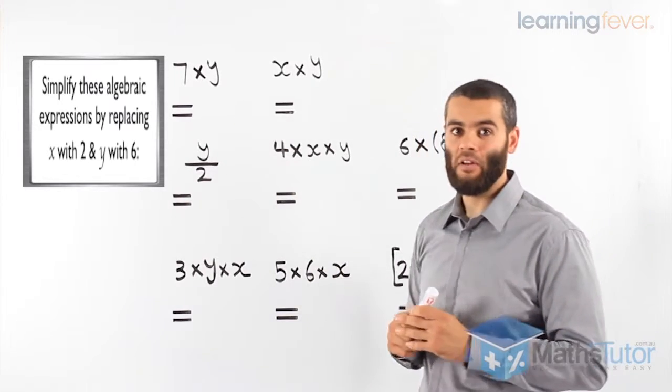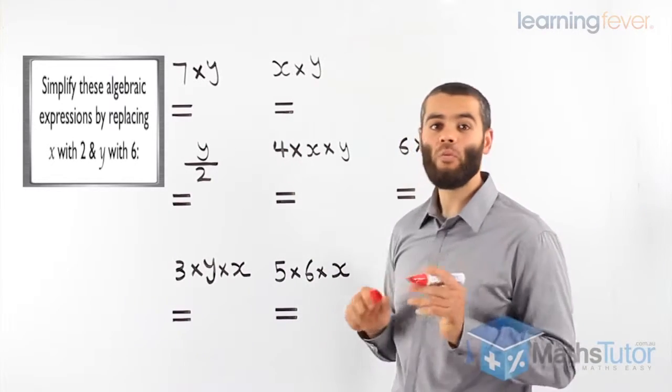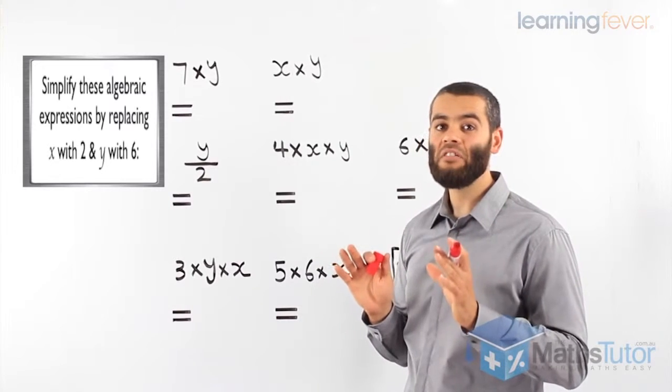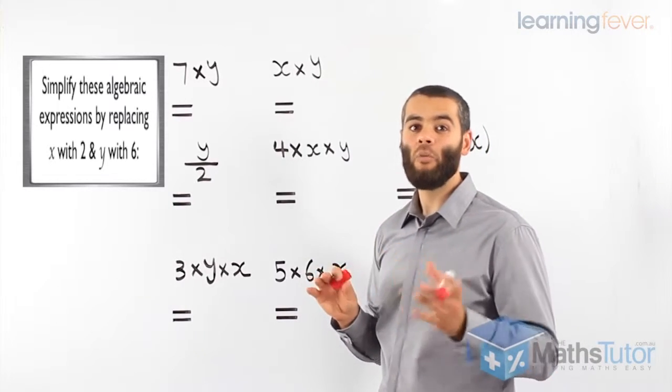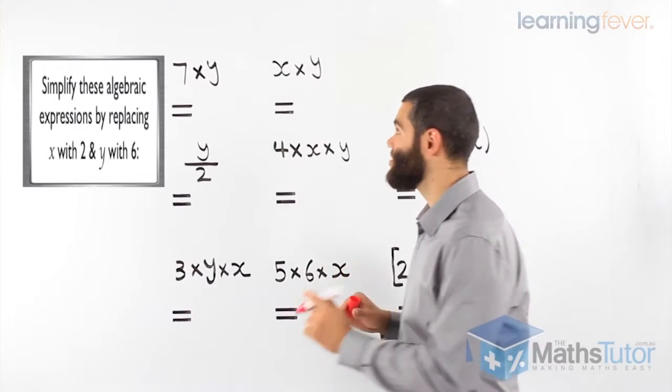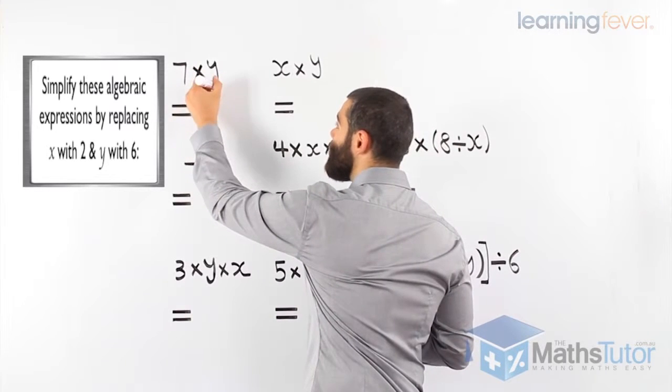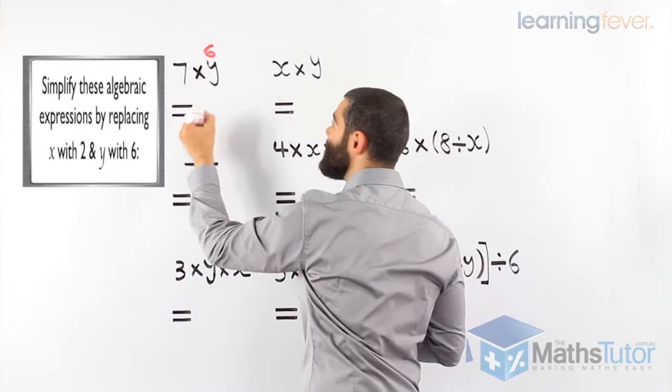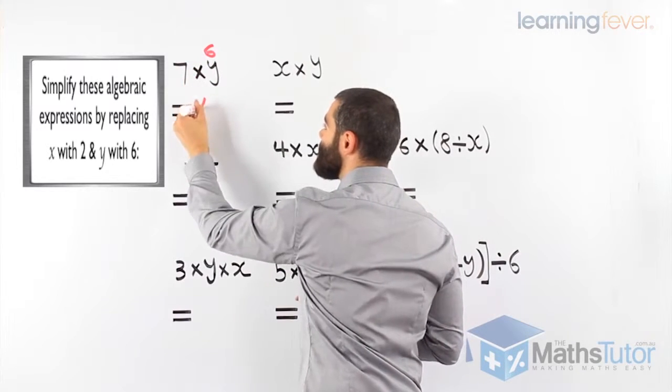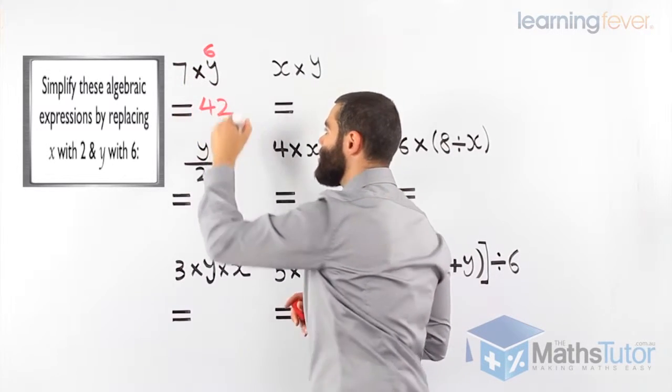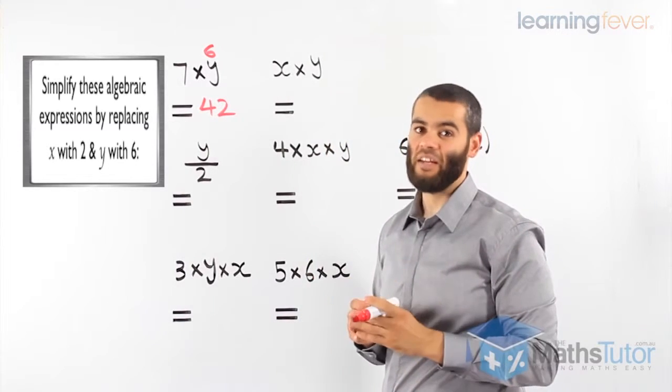7 times y. We know, wherever we see a y, we know that instead of a y, we replace it, we substitute it with a 6. So, 7 times y in reality means 7 times 6. 7 times 6, 42. It's that easy.